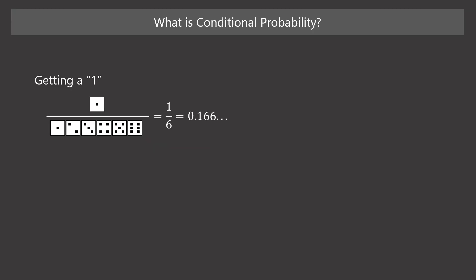Suppose we throw a six-sided die. What is the probability of getting a 1? It may be a piece of cake for you. It is 0.166666.